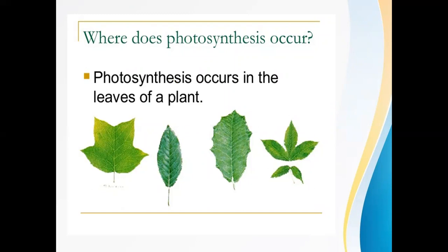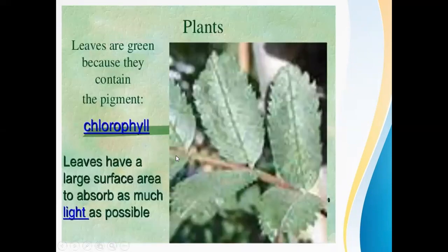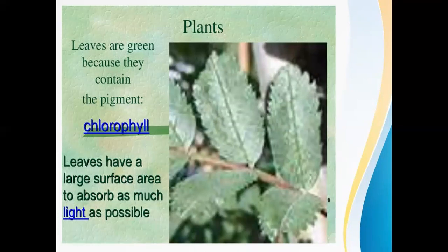Now the question arises: where does photosynthesis occur? Photosynthesis occurs in the leaves of a plant. Remember, dear students, that photosynthesis always occurs in the green part of the plant, and that green part is the leaves. Leaves are green because they contain the pigment chlorophyll.